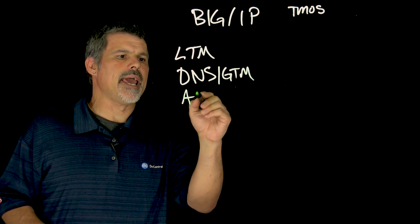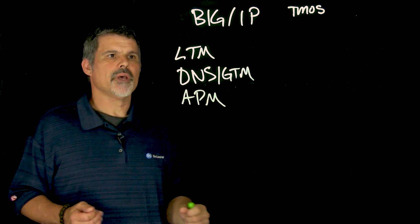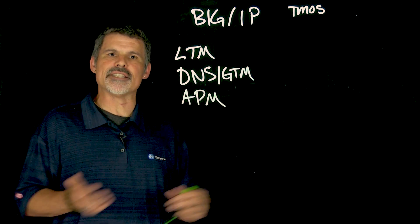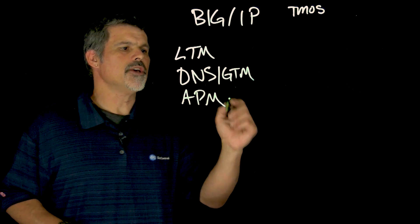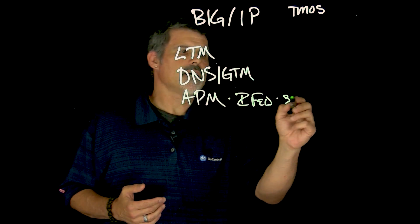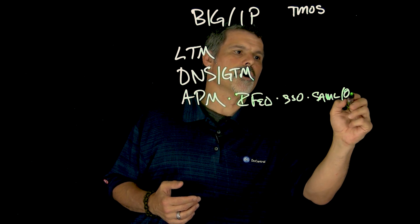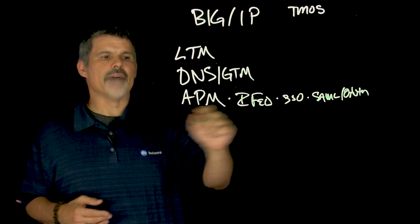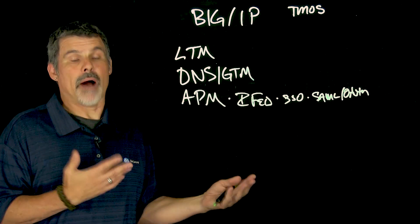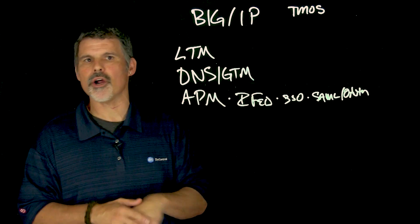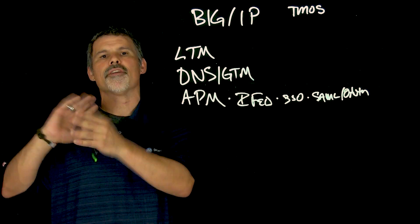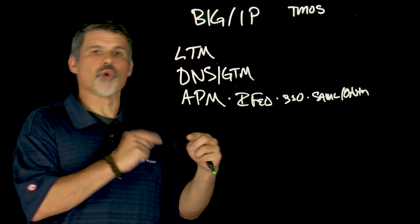Next is Big IP APM, or Access Policy Manager. As the name implies, it provides access policy and access control to your sensitive resources on the back end. With APM, you think of things like identity and federation management — single sign-on, SAML tokens, OAuth, things like that. It can also do device inspection, so you can get very granular with policies. Depending on the user, the type of device, the security posture of that device, the type of network — mobile or LAN — all of these conditions determine what resources you get access to.